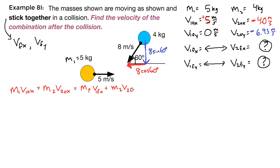5 times positive 5 plus 4 times negative 4 is equal to 5 v final x plus 4 v final x. So we have 25 minus 16 is equal to 9 v final x.